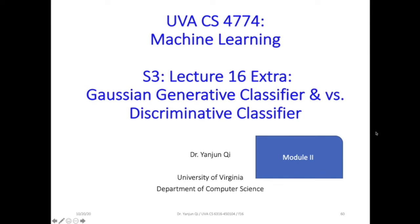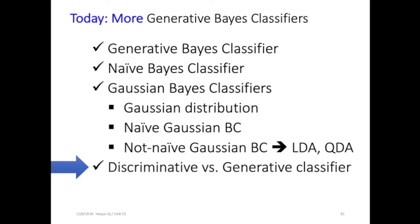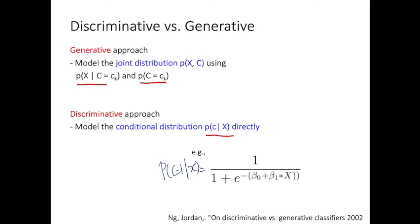This is module 2 inside section 3 of the extra lecture for Gaussian generative base classifier. In this module we will compare the generative classifier and discriminative classifier — more specifically, logistic regression versus LDA.